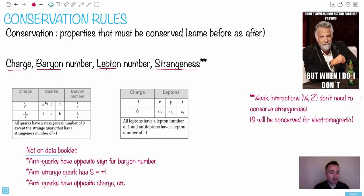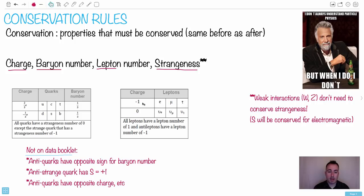Looking at quarks, you've got UCT — look at the charge for U, C, and T, the charge is two-thirds e. But for DSB the charge is different, it's minus one-third e. Remember, e is the elementary charge. So you've got charge figured out for quarks. And just for your leptons — your electron, muon, and tau — your charge is negative one e. And for your neutrinos, the charge is zero because they're neutral.